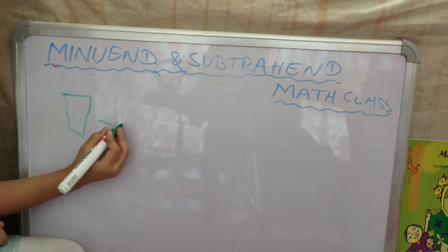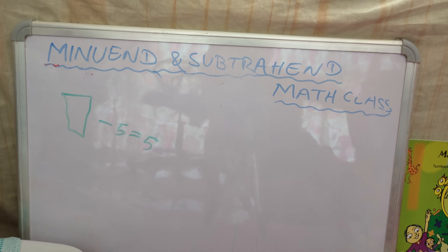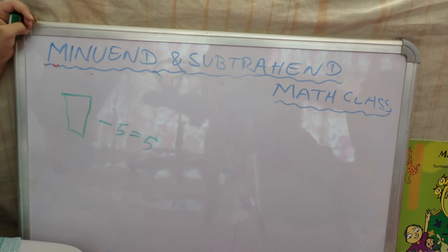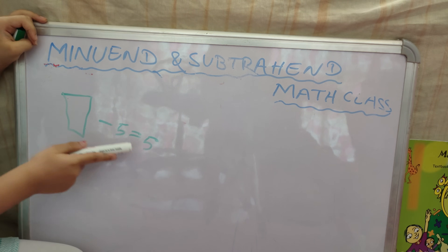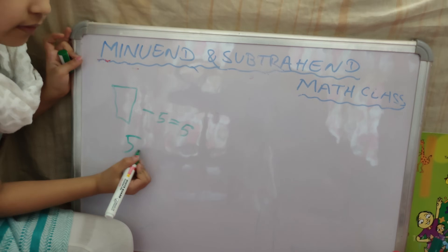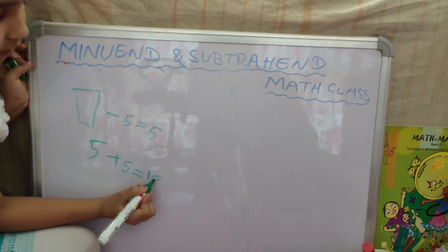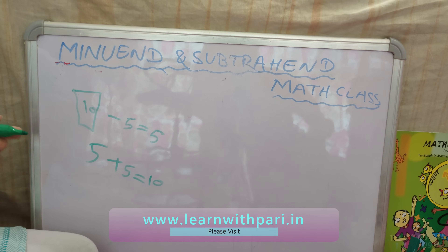Blank minus 5 is equal to 5. Kids, what is missing here? Subtrahend, ma'am. Wrong! The minuend is missing here. How will we solve this problem? I will tell you a simple way — we will add. So let's use this: 5 plus 5 is equal to 10, ma'am. Correct! So here the answer is 10. Simple, right? Let's check: 10 minus 5 is equal to 5. Correct!